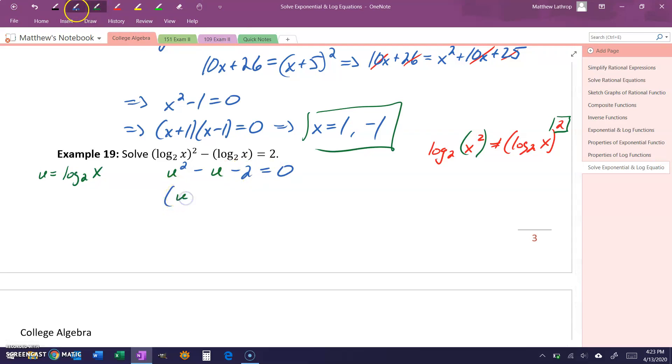This will factor as u minus 2 times u plus 1. Substituting our expression back in, this would be the log base 2 of x minus 2 times the log base 2 of x plus 1 is equal to 0, leaving us with two different statements to solve.